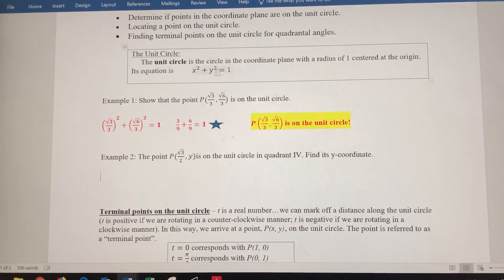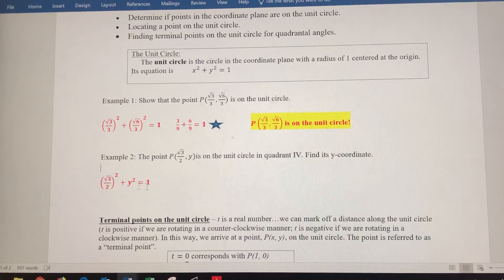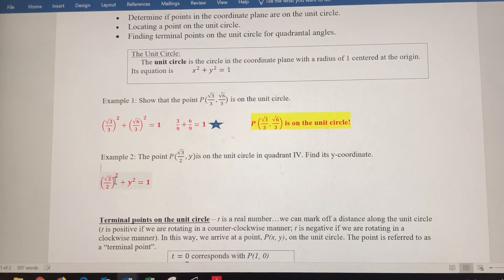So remember our equation for the unit circle is x-squared plus y-squared equals 1. All right, so we're going to plug in what we know. So x-squared, radical 3 over 2 to the second power, plus y-squared equals 1.